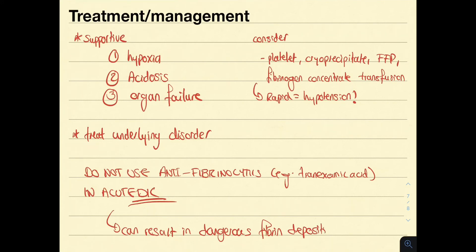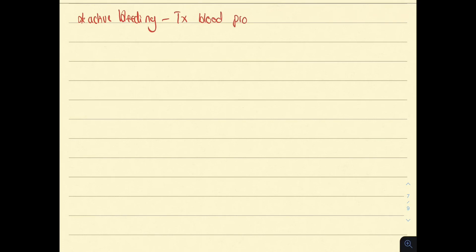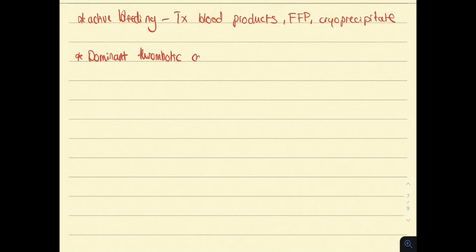Antifibrinolytics might be used in chronic DIC, but only under specialist guidance. Depending on the clinical scenario and under specialist guidance: if a patient presents predominantly with active bleeding, consider transfusions of blood products, FFP, and cryoprecipitate. If a patient presents predominantly with thrombosis, consider heparin. These should only be considered under specialist guidance — this must be emphasized.